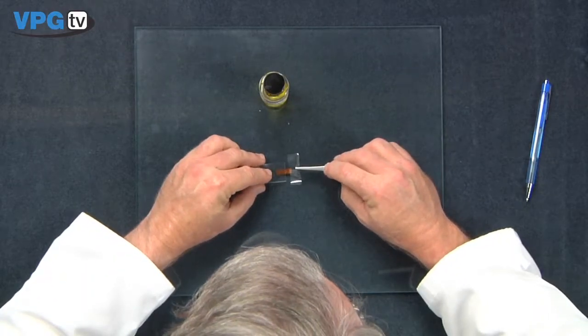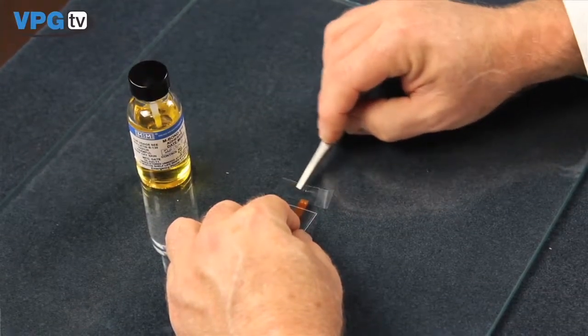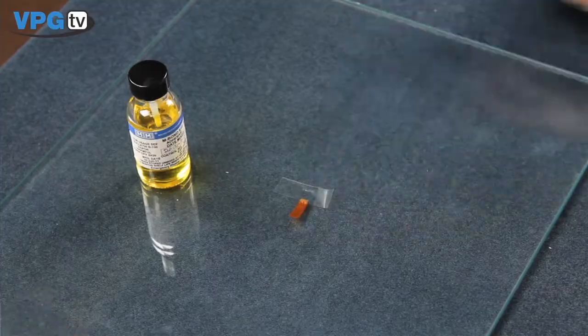Using a short length of MJG2 Mylar tape, cover just the terminal into the gauge. Leave three open sides for solvents to escape.